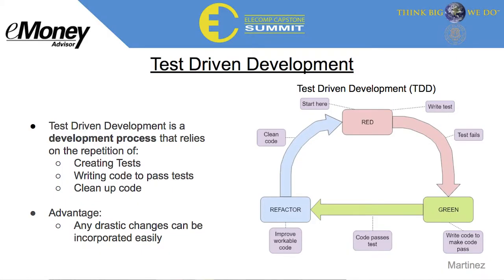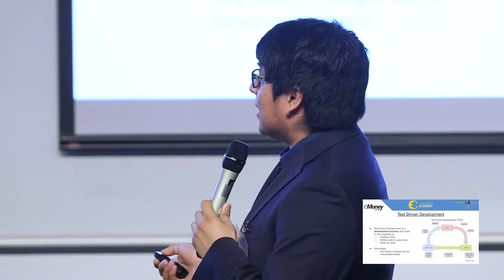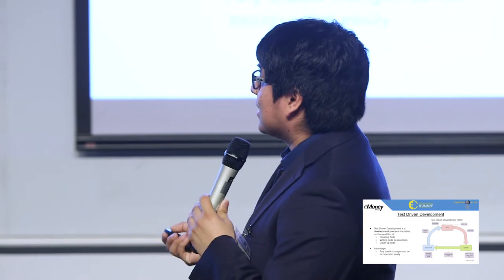A big part of our project was working in a software engineering environment, which involved test-driven development. In test-driven development, a developer first writes a test that maps out what their code is supposed to do. This is known as the red stage, because once the developer runs the code, it will give a failed status — that's why it's red.